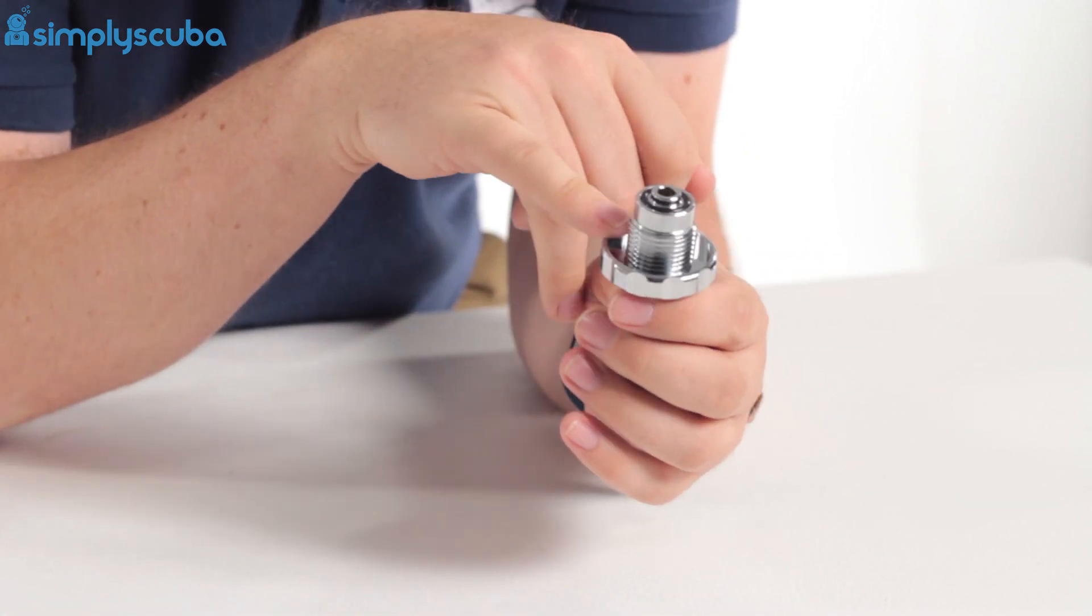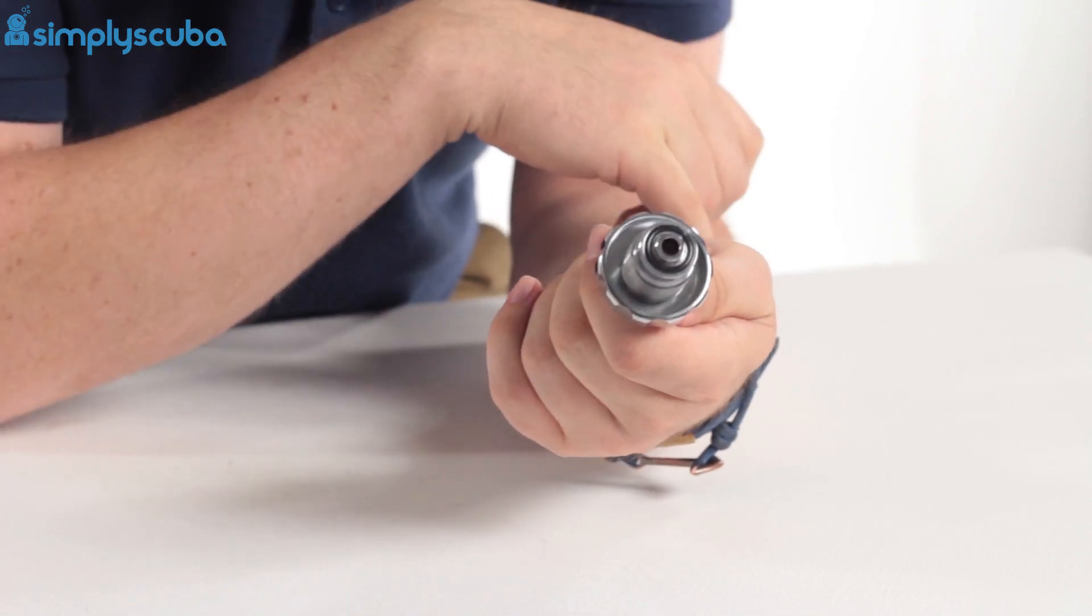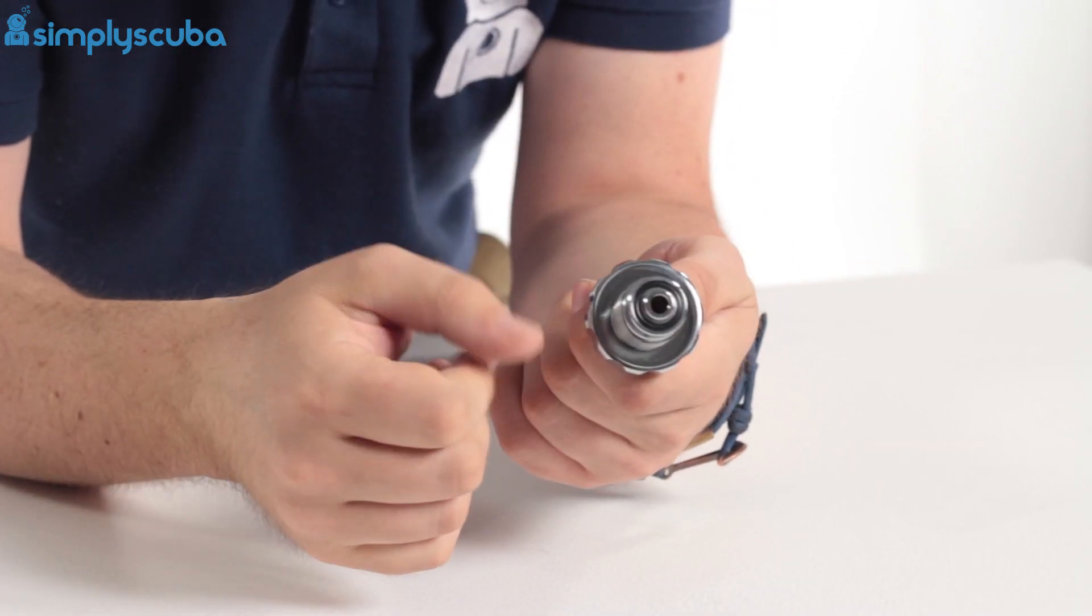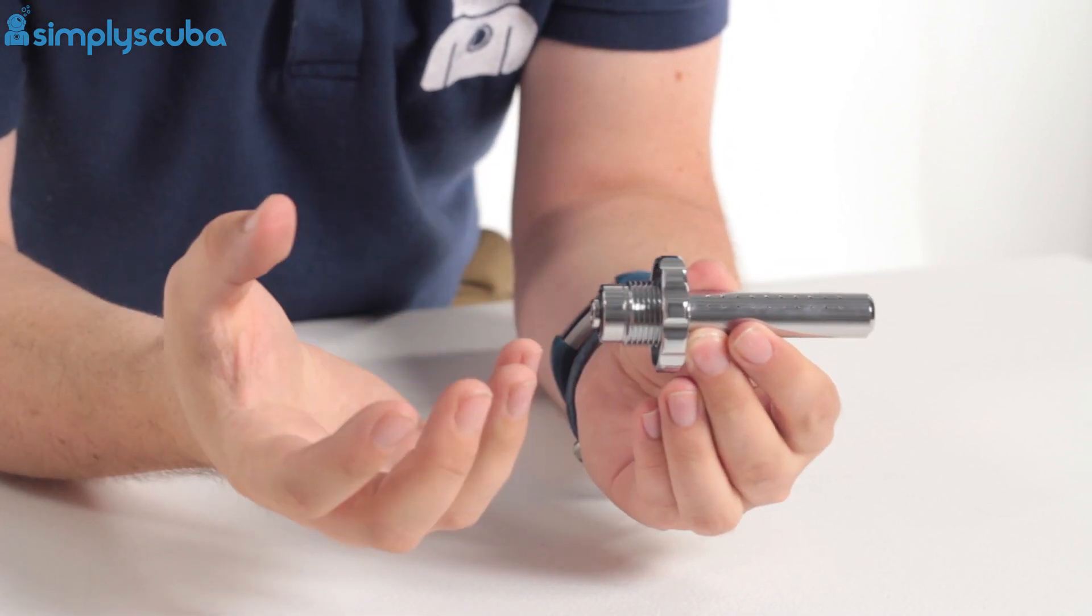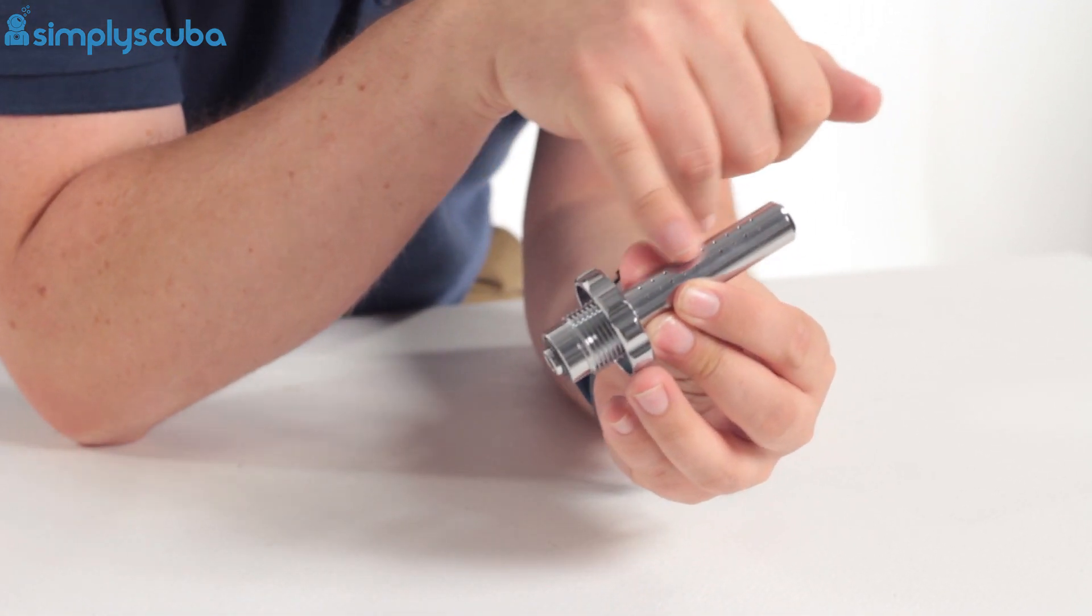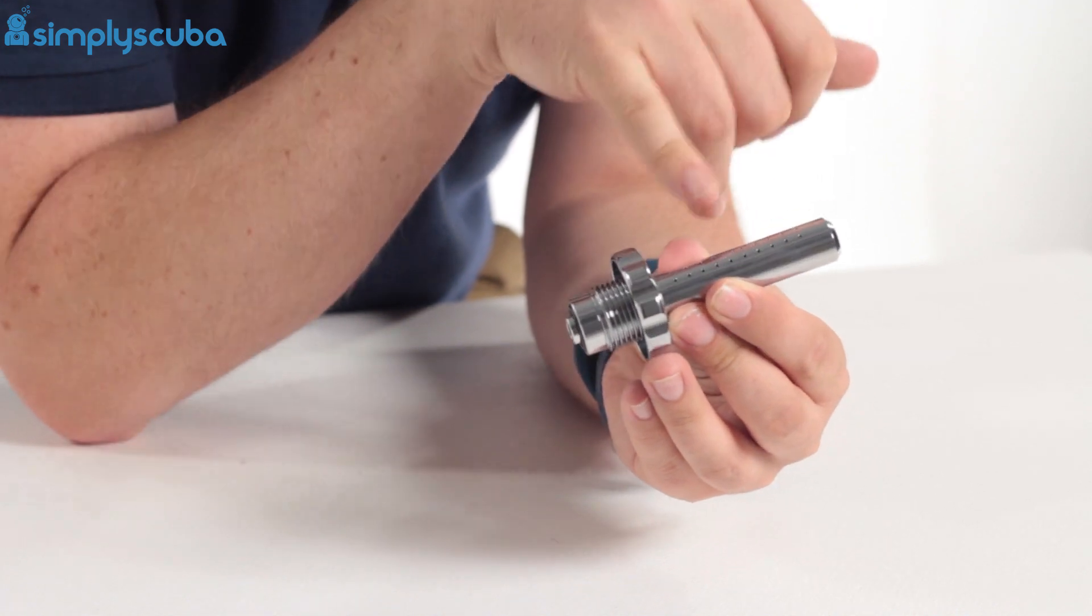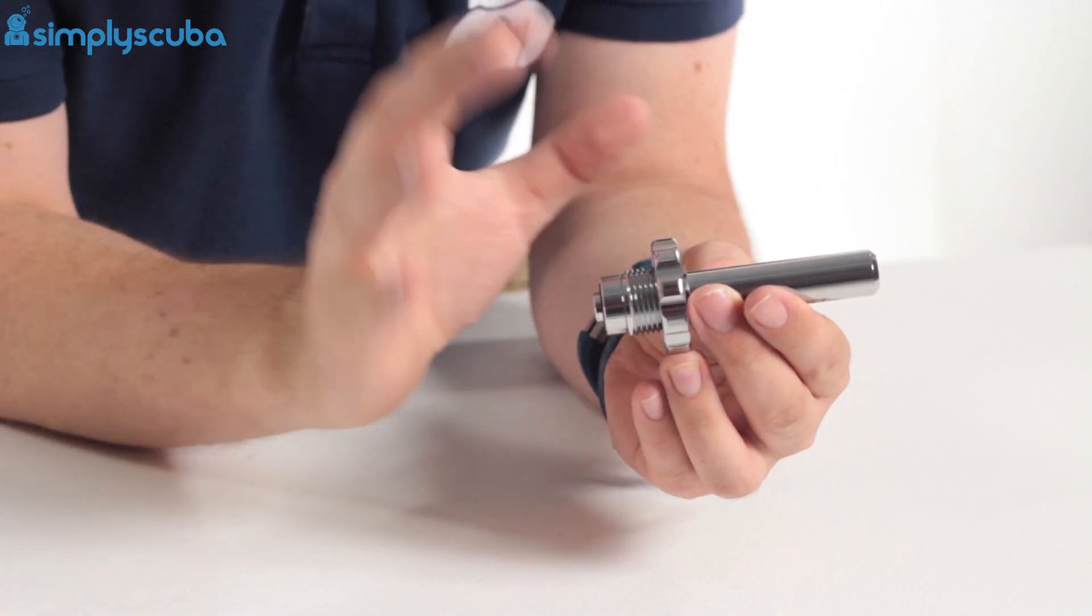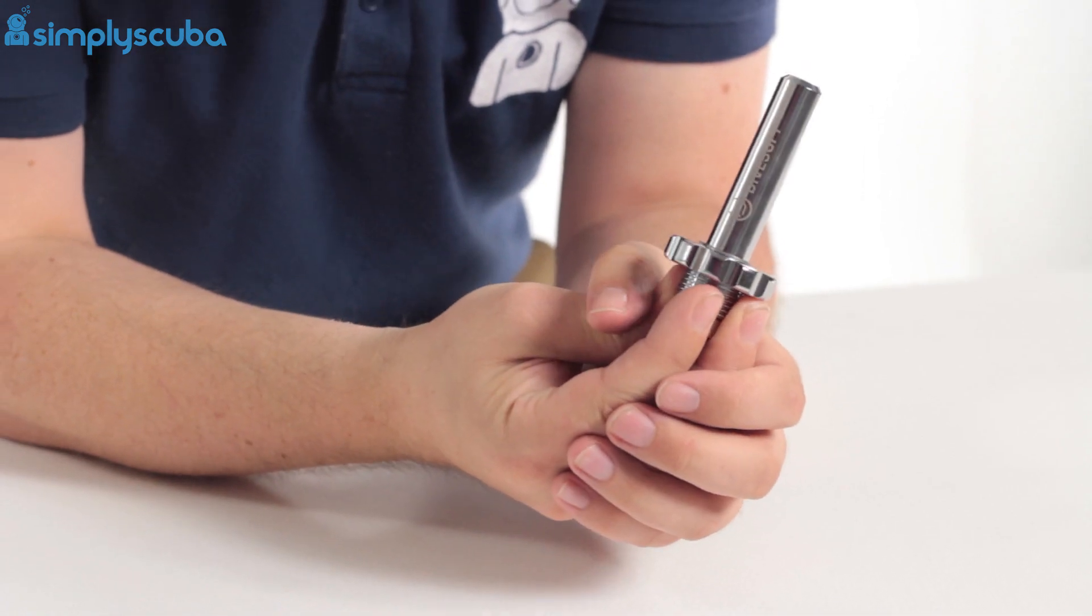It has a traditional DIN thread and standard o-ring. You screw it in just like your regulator, open up the cylinder valve, and it slowly vents out the gas through these little holes while making much less noise.